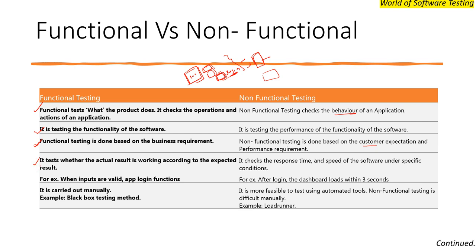The fourth difference: functional testing checks whether the actual result matches the expected result. For the login scenario, there are four test cases: valid username and valid password should log in; valid username with invalid password should not log in; invalid username with valid password should not log in; and both invalid should not log in — only the first case should result in a successful login.